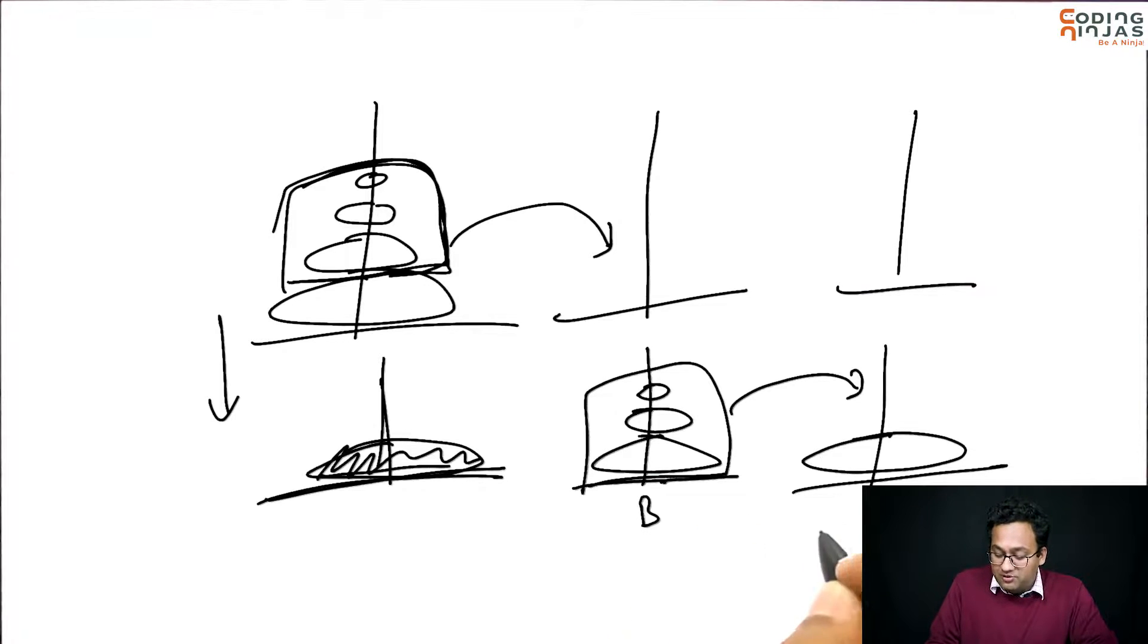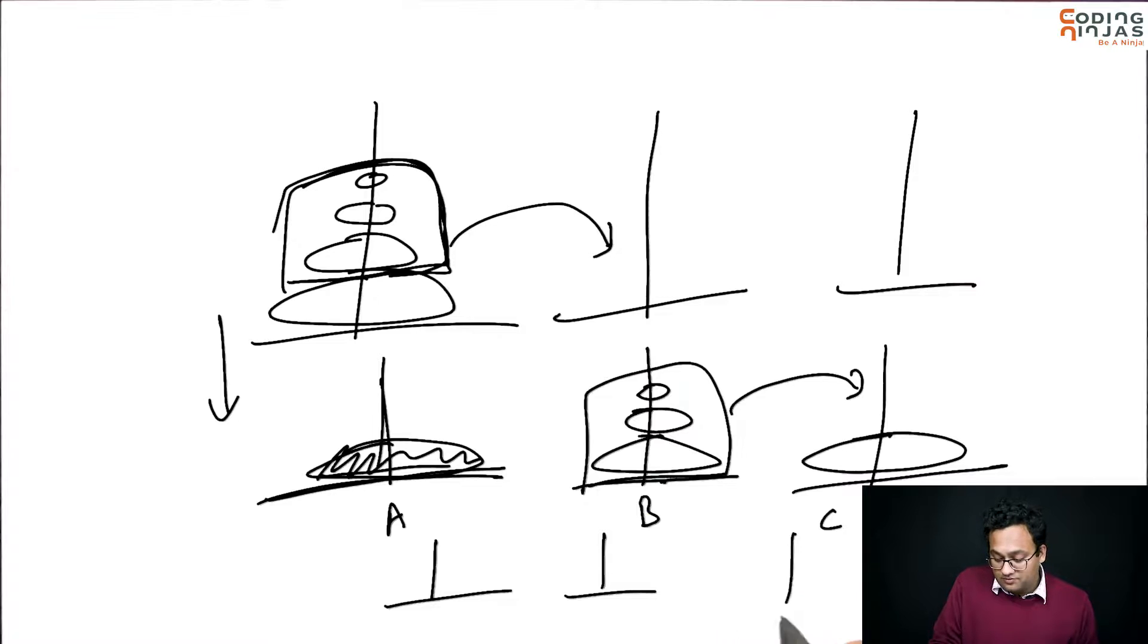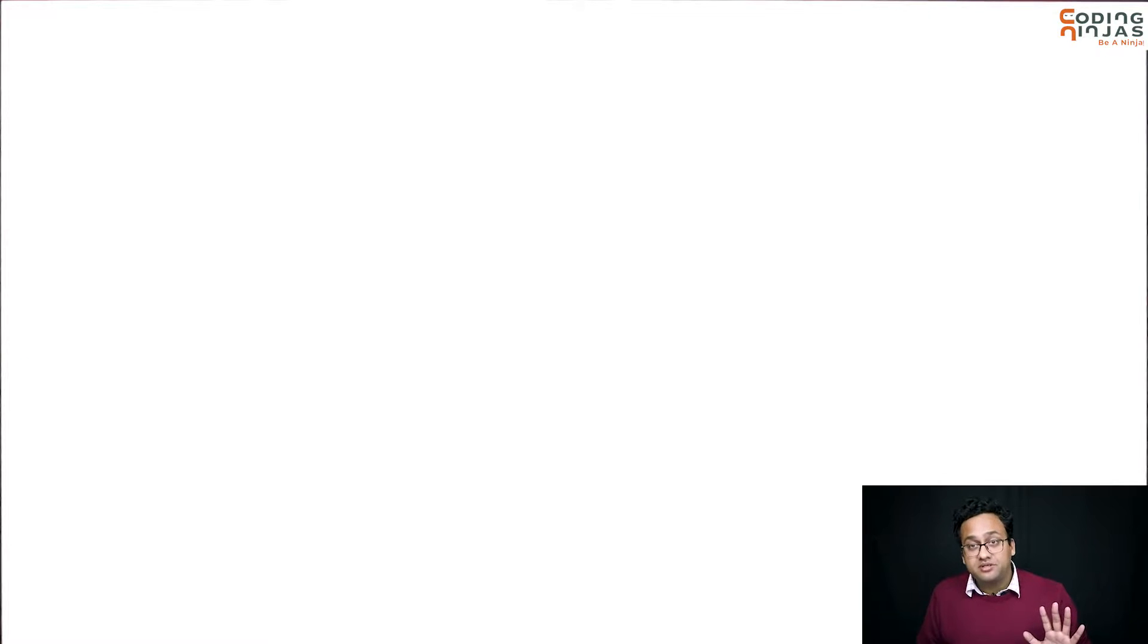Now, you can move these n minus 1 to the destination from the helper using the source as helper. So, I can move from B to C and I can use A as the helper and I have reached the desired goal. The largest disk is here and I am able to move n minus 1 here as well. So, my code will be extremely simple.